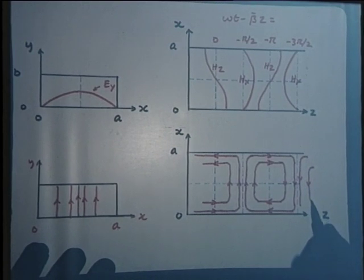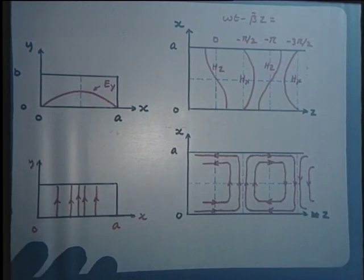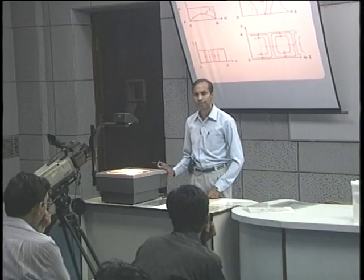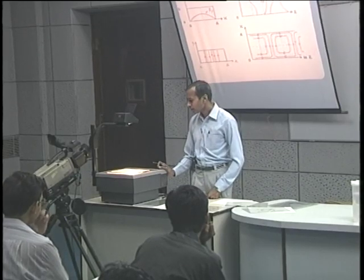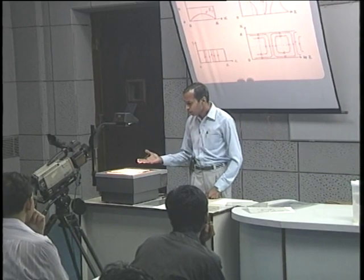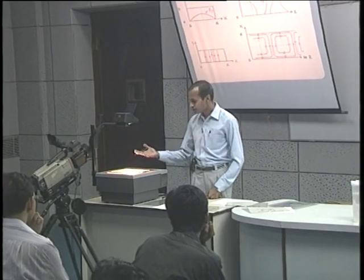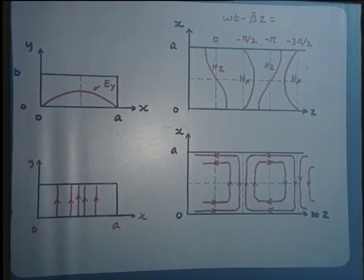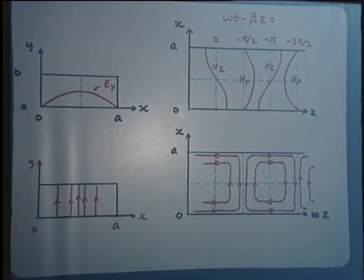By showing the density of lines we can give an idea about the magnitude of the various field components. Along the y direction the same field configuration persists since there is no variation along the y direction for any field component.